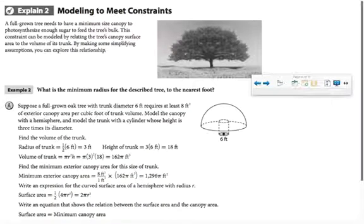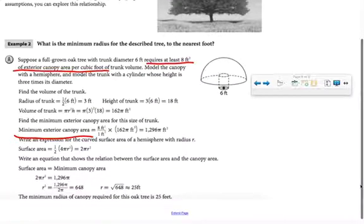In this example, we're using the fact that a tree needs a certain amount of leaf surface area in order to sustain the trunk. Okay, so they found the volume of the trunk, and notice that we're told that this tree requires at least 8 square feet of exterior canopy area per cubic foot. So they found the volume of the trunk, and then using that, they found the minimum radius of that canopy. So, in essence, they're finding, how much space do I need to give this tree so that it will grow enough to support its trunk? Let's look at an example just like that.